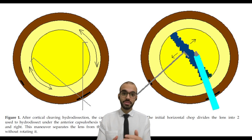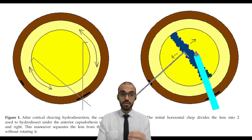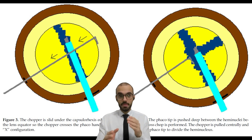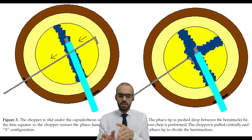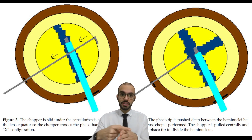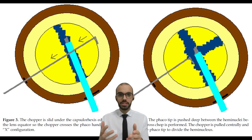The first step: you perform hydrodissection of the nucleus, but you do not rotate it, because rotation of the nucleus causes stress on the zonules. The second step is to make the first fracture in the middle of the nucleus, leaving two halves. The third step: you place your phaco tip between the two halves — you are not going to push two or three mode at this time, just leave your tip between the nucleus halves. Then you place your chopper perpendicular to your tip and bring the chopper toward your tip, doing a vertical chop without rotation, at an angle of 90 degrees.